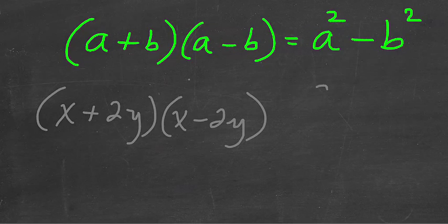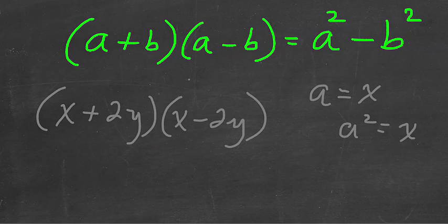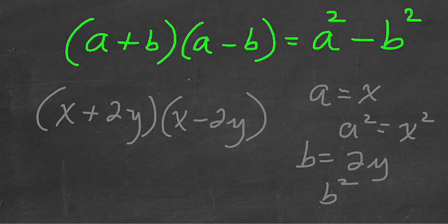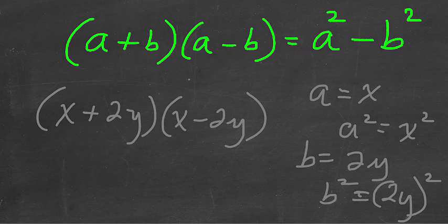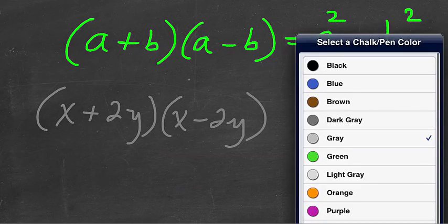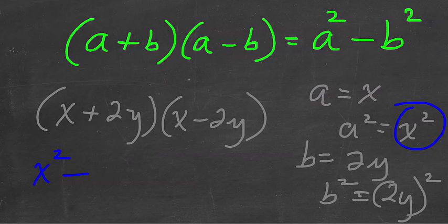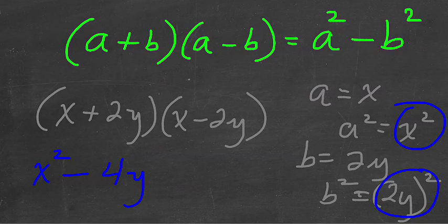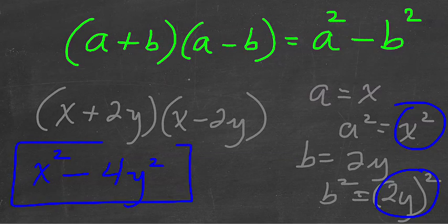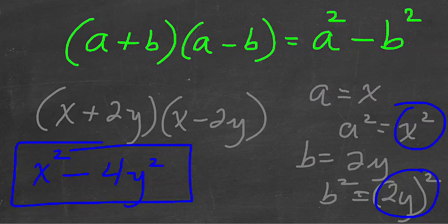And I can see that a is equal to x so a squared is x squared. b is equal to 2y so b squared would be equal to 2y to the second, that's a power of a power. So now let me just find a nicer color. I can see that all I have to do is find a squared and subtract 2y squared which is 4y to the second and that's the same product we got when we use the distributive property.